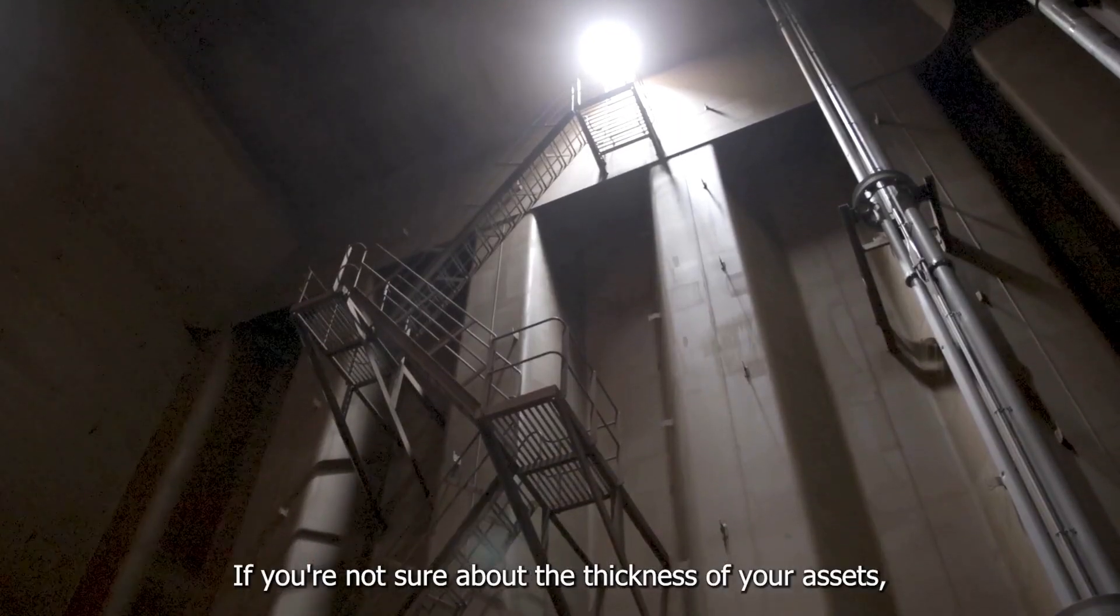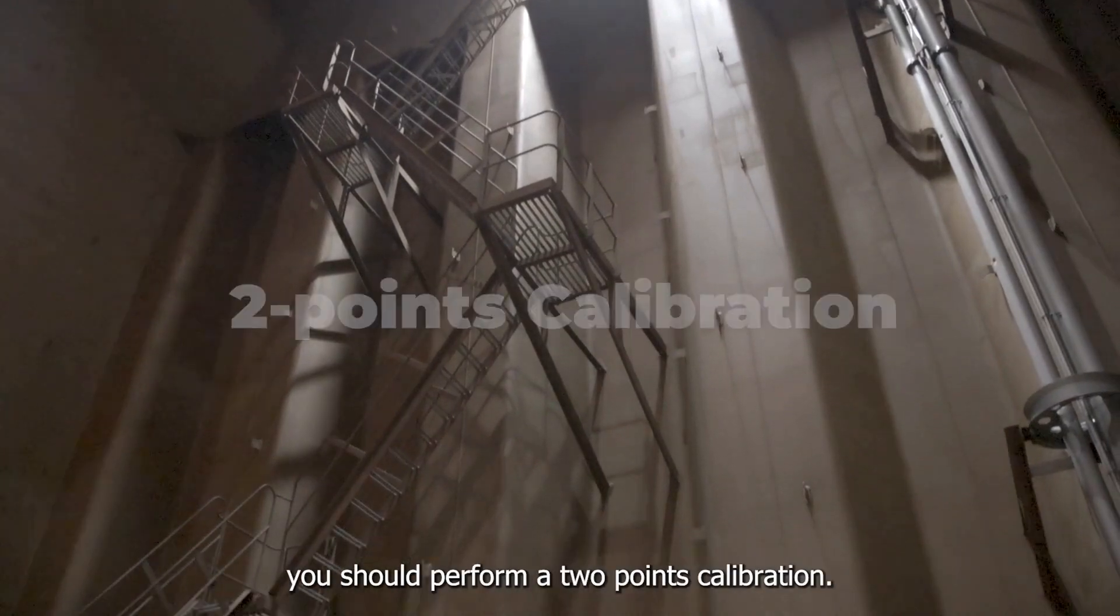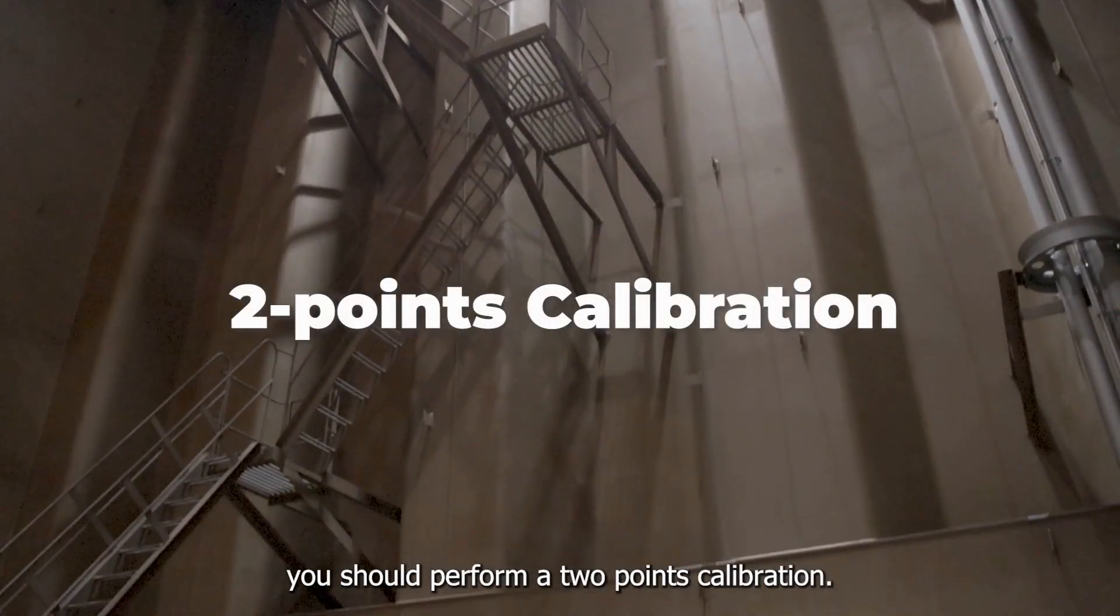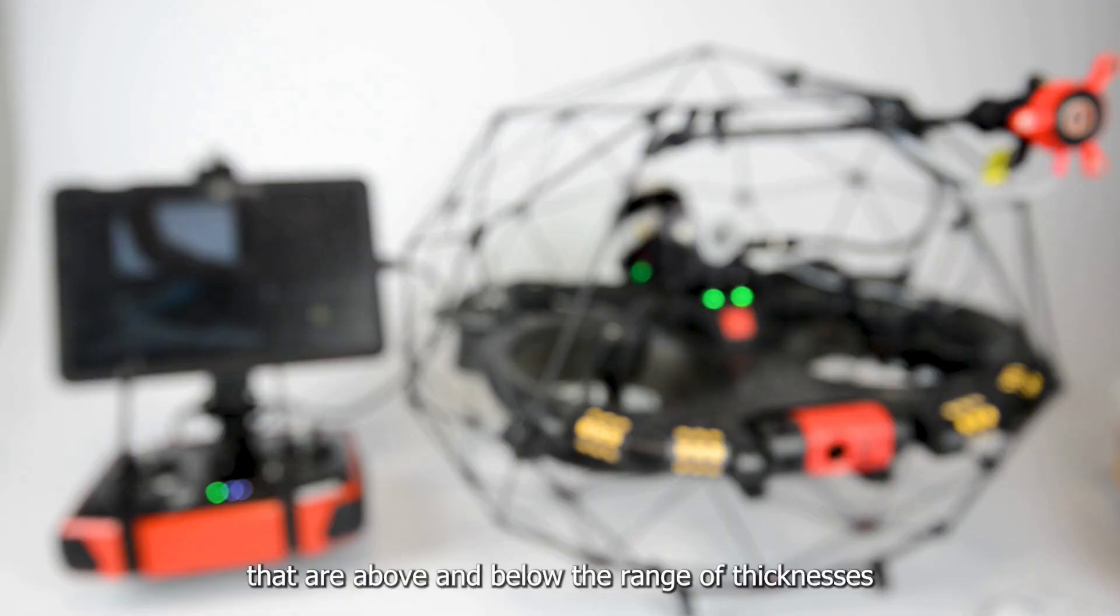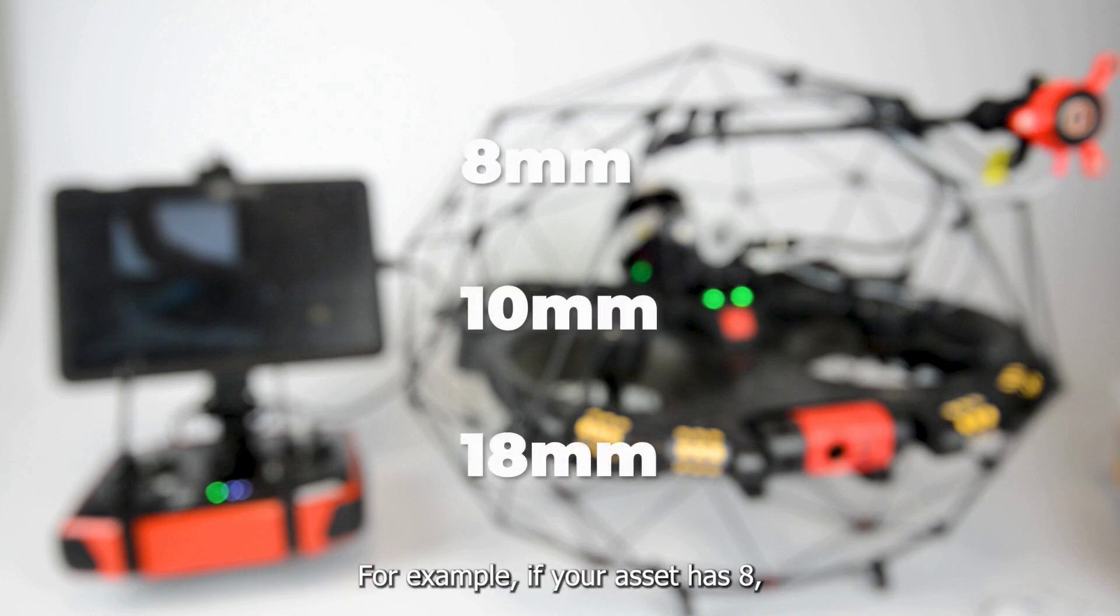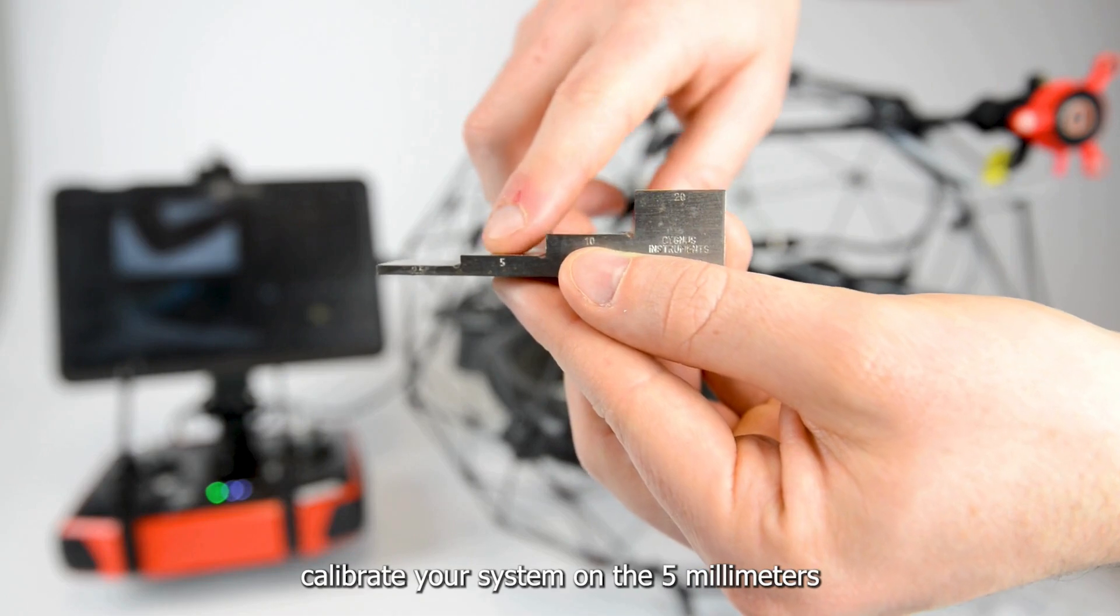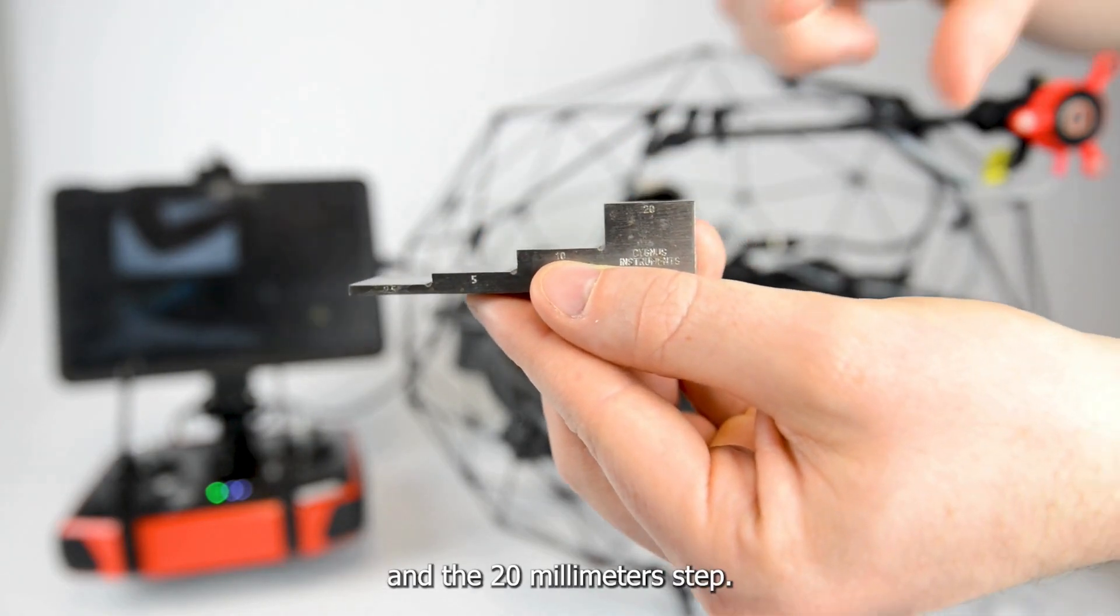If you're not sure about the thickness of your asset or if your asset has different thicknesses, you should perform a two-point calibration and choose two points that are above and below the range of thicknesses you have to measure. For example, if your asset has 8, 10, and 18mm plates, calibrate your system on the 5mm and the 20mm step.